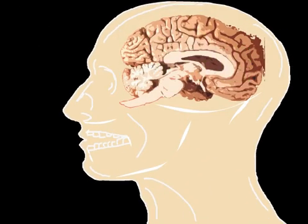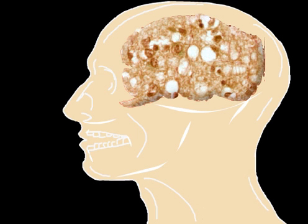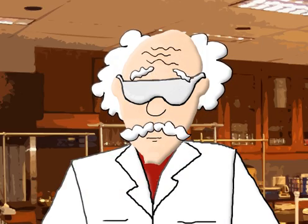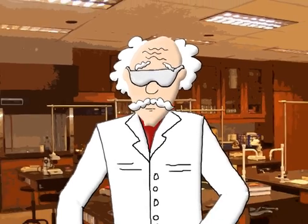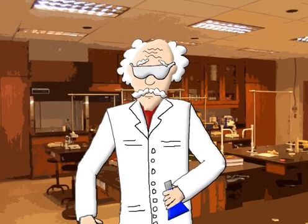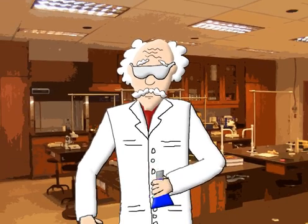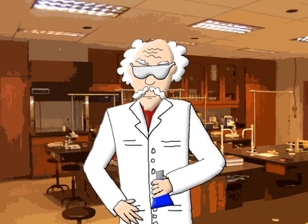In all cases, varying degrees of spongiform degeneration can be observed in the central nervous system. Unfortunately, no cure for prion disease has been discovered yet. One of the major difficulties is that prions are virtually indestructible, as opposed to normal proteins.